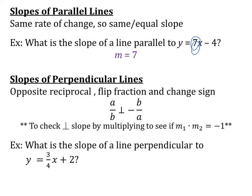Also, if you want to check if two slopes are perpendicular, if you multiply them together and they equal negative 1, then the two lines are going to be perpendicular.